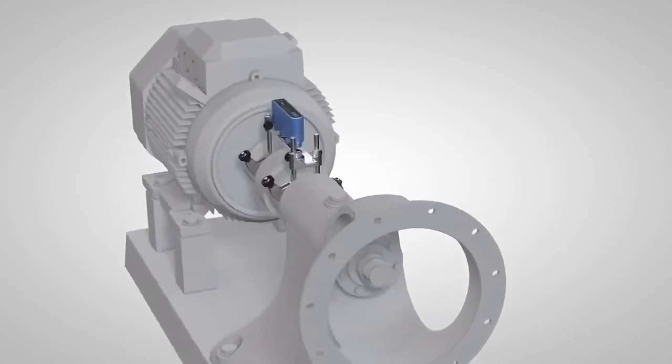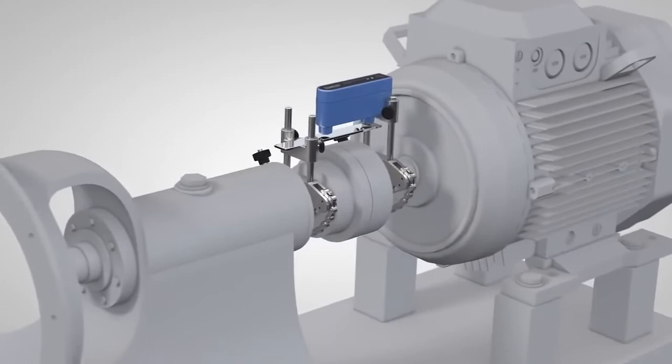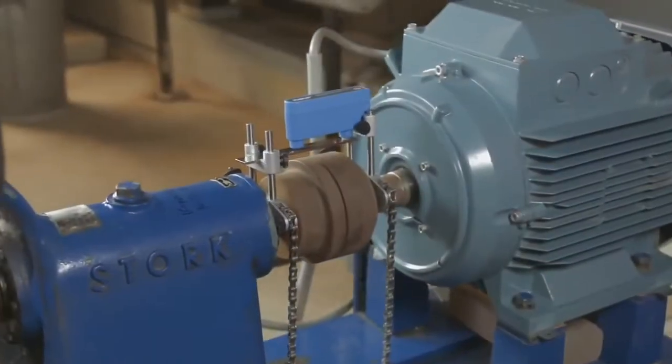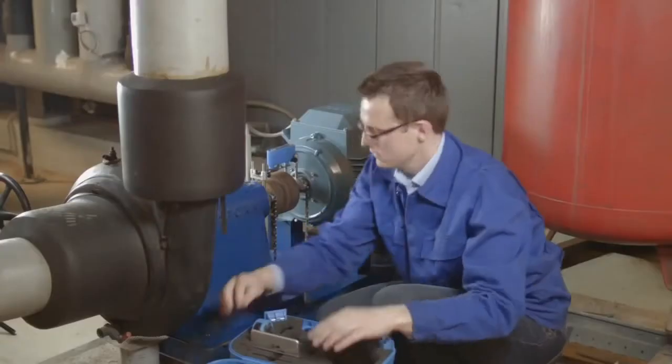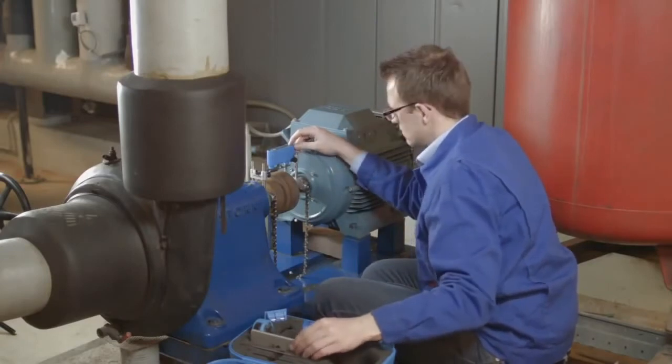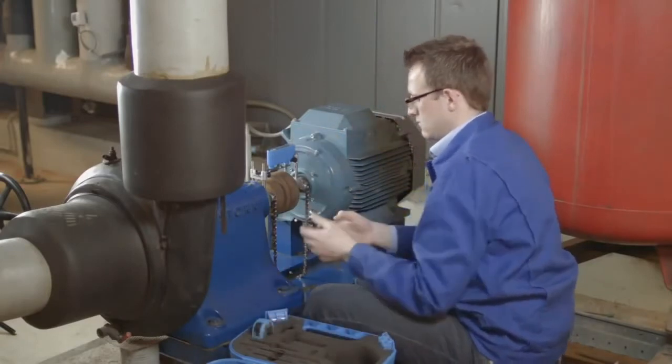To perform shaft alignment on your machines, simply mount the TKSA 11 on both shafts or sides of the coupling. Turn the measurement unit on and start the TKSA 11 app on your mobile device.